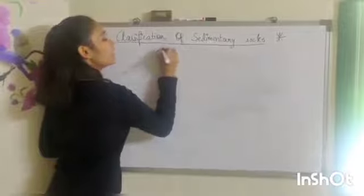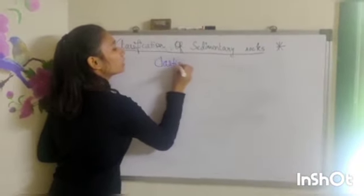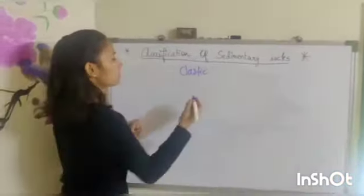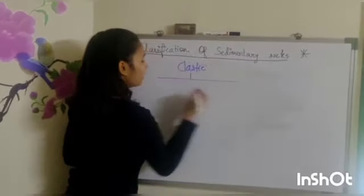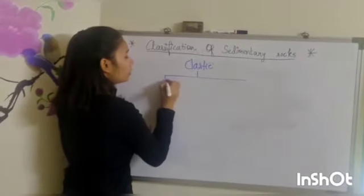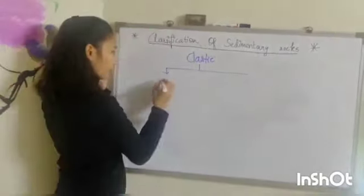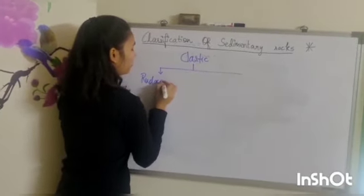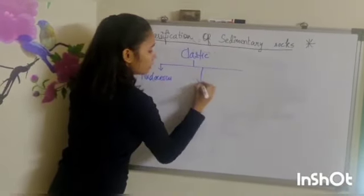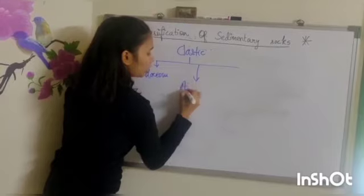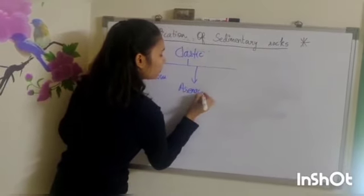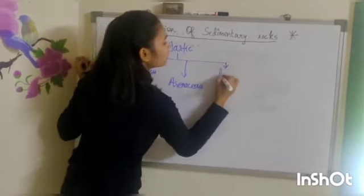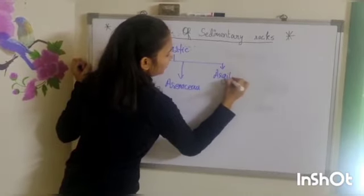Clastic sedimentary rocks are further divided into three subcategories on the basis of their sediment size according to the Wentworth scale. First is rudaceous, second is arenaceous, and third is argillaceous.